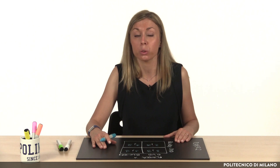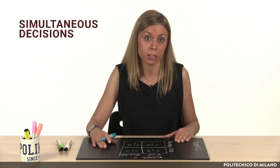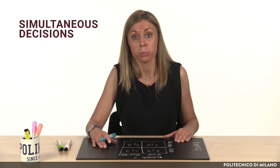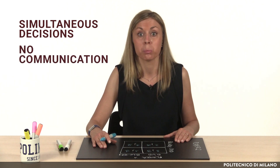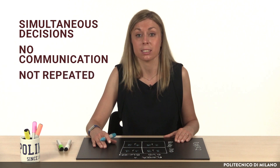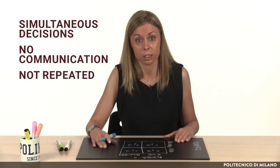The payoff matrix contains the information that each actor has about the overall game. On the basis of this information, each actor takes their personal decision independently. In the decision-making model through game theory, it is assumed that players need to take their decisions simultaneously and without any chance to communicate with each other. Moreover, game theory assumes that each game is not repeated, but run just once.